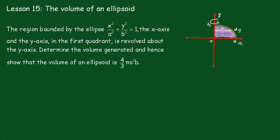Lesson 15: The Volume of an Ellipsoid. The region bounded by the ellipse x²/a² + y²/b² = 1, the x-axis and the y-axis in the first quadrant is revolved about the y-axis. We've determined the volume generated and hence show that the volume of an ellipsoid is (4/3)πa²b.